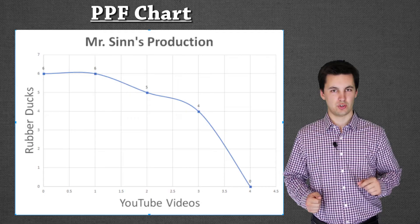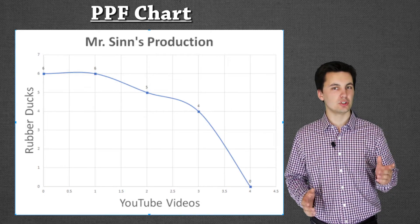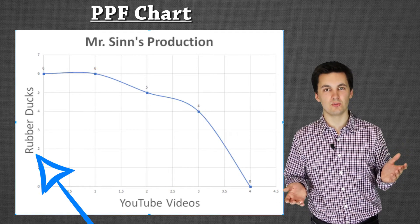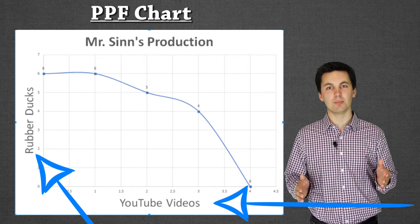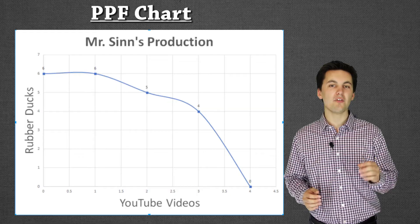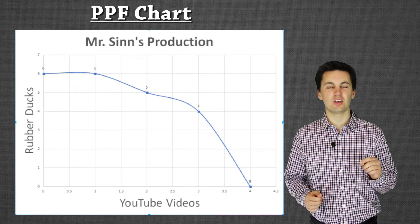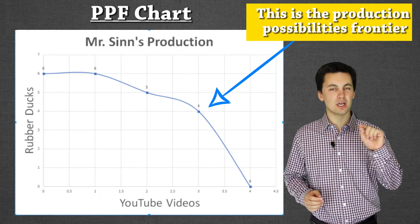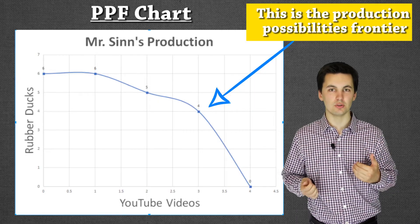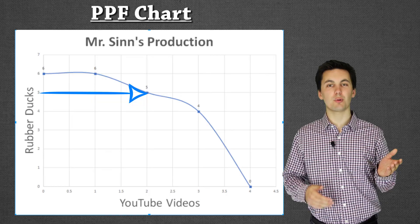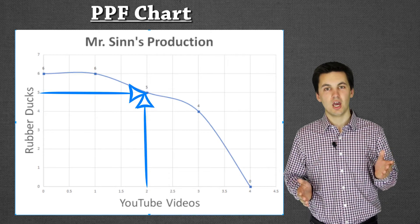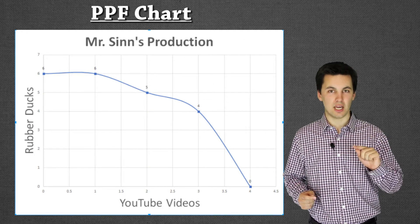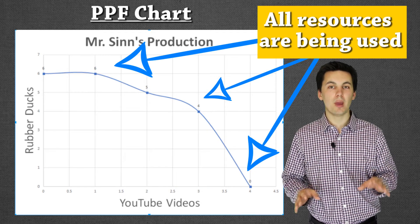You can see that the PPF chart is on the screen, and there are two different things that we can produce. For this PPF chart, I'm looking at what I can produce — I can either produce ducks or YouTube videos. I have to make a choice; I don't have enough time because of scarcity of resources to do both. One of the things you can see is this line — this PPF chart is bowed outwards. The PPF chart is showing that anything on this line represents different combinations I could produce. For example, I could produce five ducks, but then I would only be able to make two YouTube videos. Anything on the PPF line is when we are maximizing our resources.